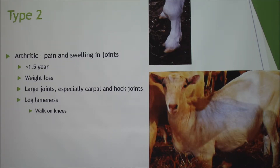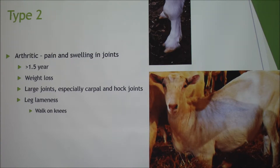The second type is the arthritic type — pain and swelling of the joints. This happens to goats that are about a year and a half and older. Some of the symptoms are weight loss and large joints, especially the front knees and the hump joints in the back. The pain can actually cause leg lameness, so they end up walking on their knees instead of actually standing — like that bottom picture here.